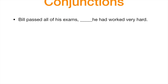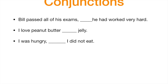Bill passed all of his exams, blank, he had worked very hard. Now I'm going to ask you to read these sentences with me and try to complete them with a conjunction. I love peanut butter, blank jelly. I was hungry, blank, I did not eat. Choose one, fries, blank pizza.